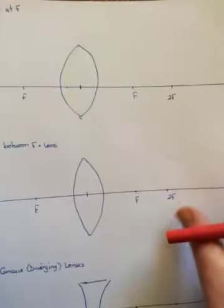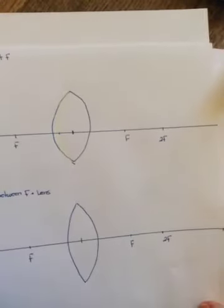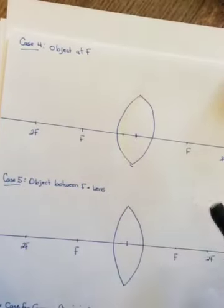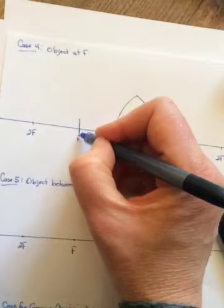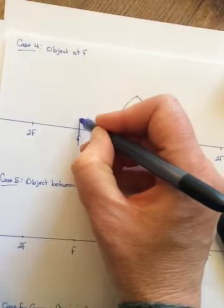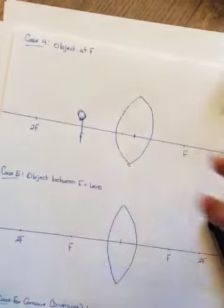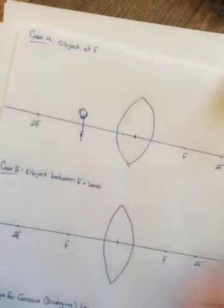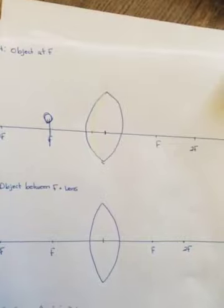So there are our first three cases. Our next two cases — object at f, so put your object here at f, and it kind of messes up our rays...